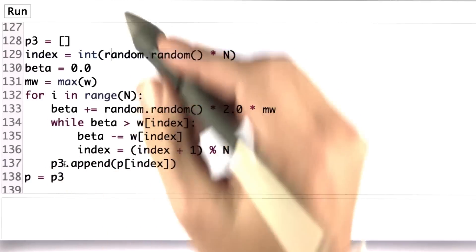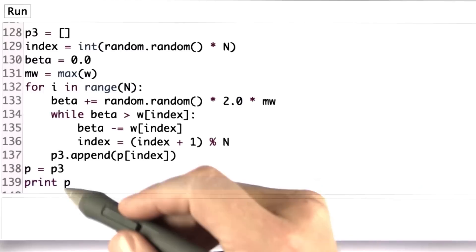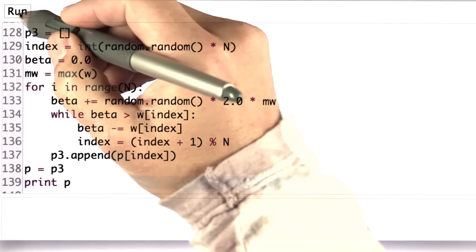So let's run it. If I run it, nothing happens to that empty set. So let me print out the resulting set of particles. So now it has a print p over here. Let me run it.